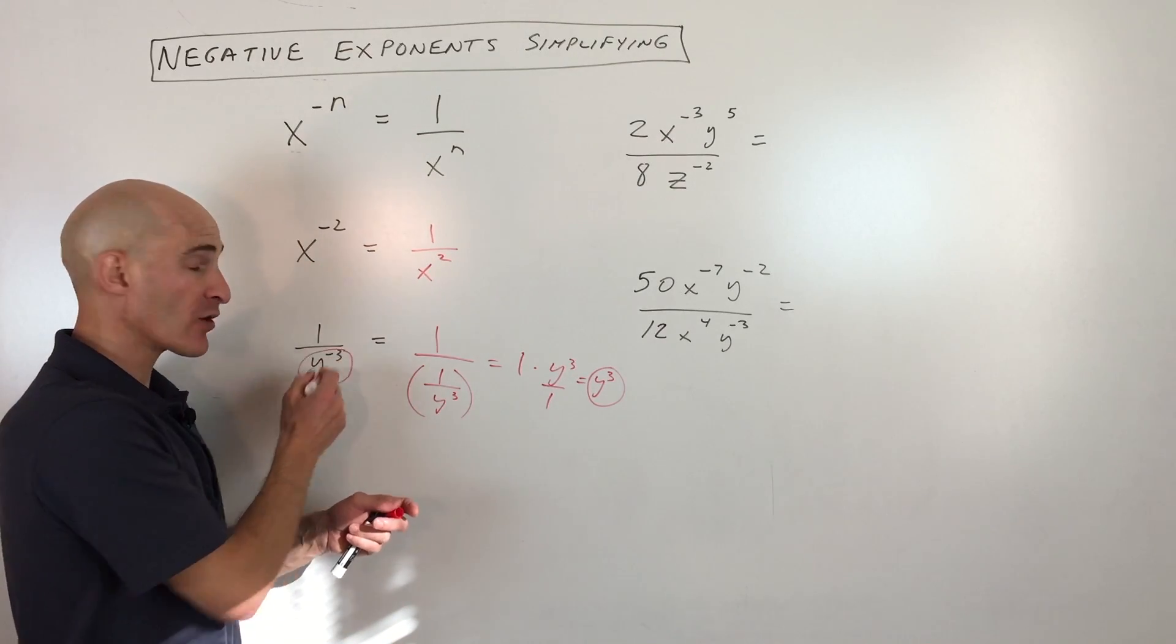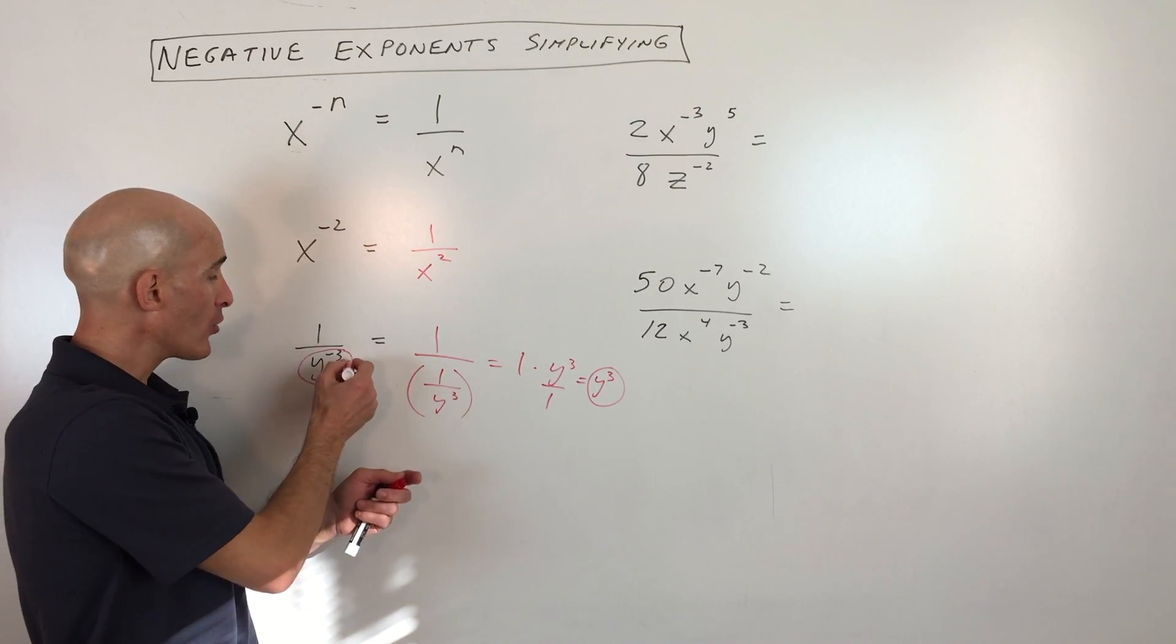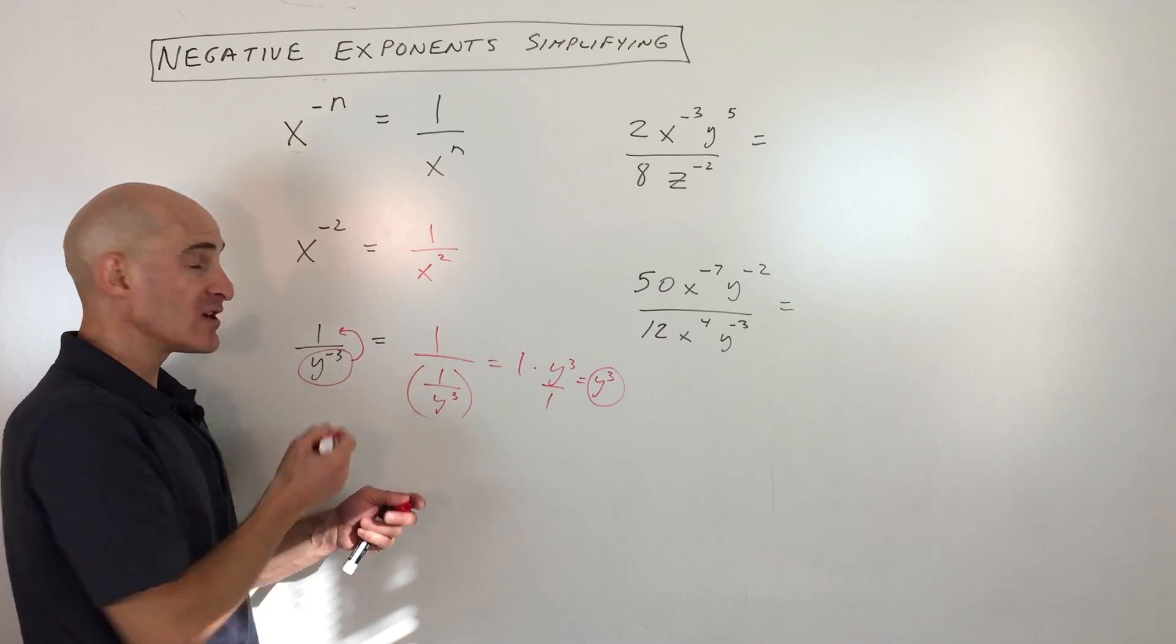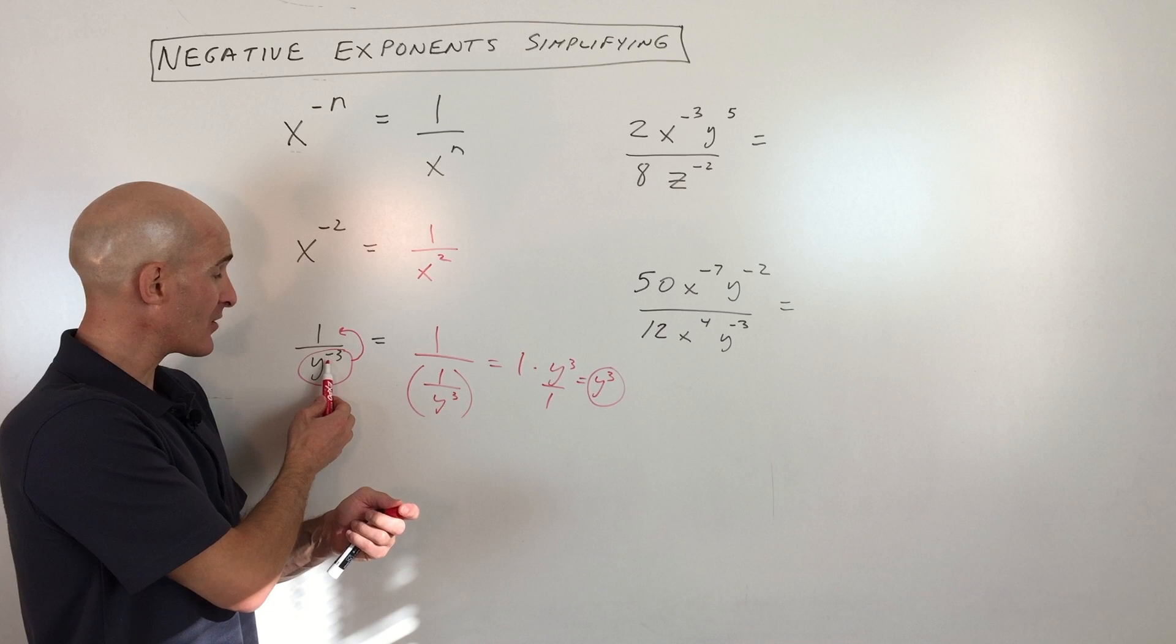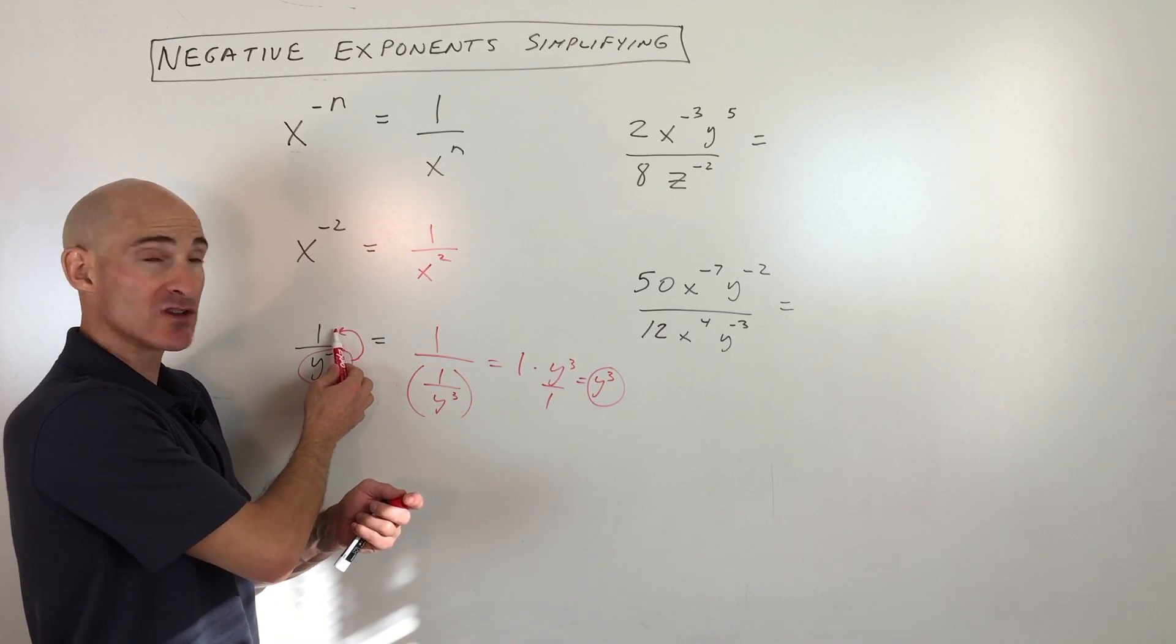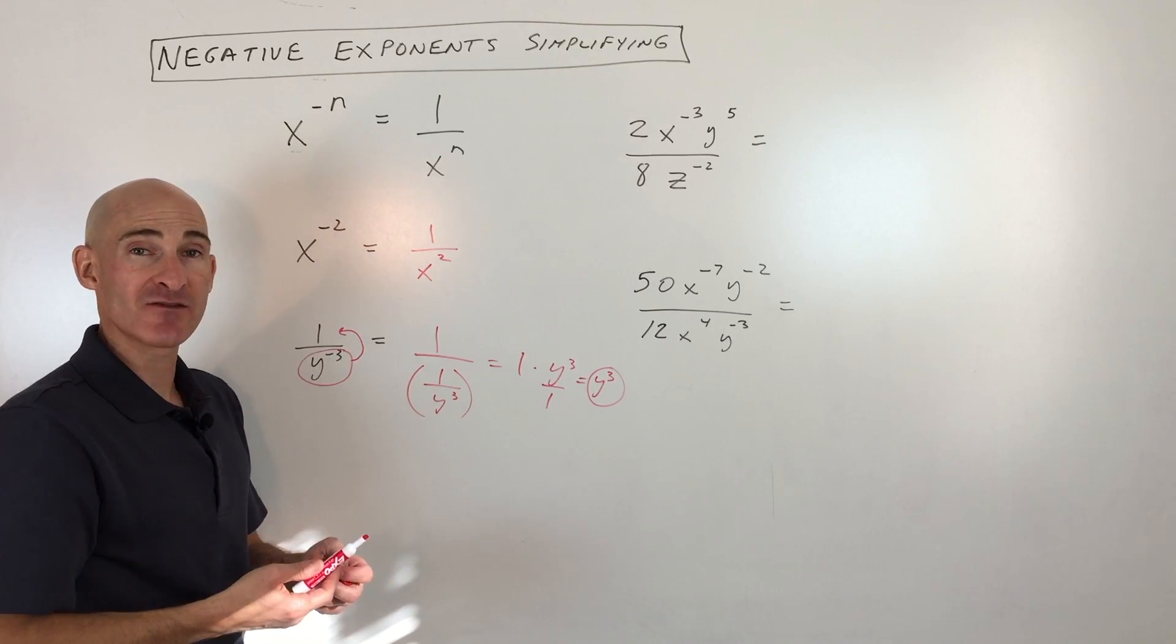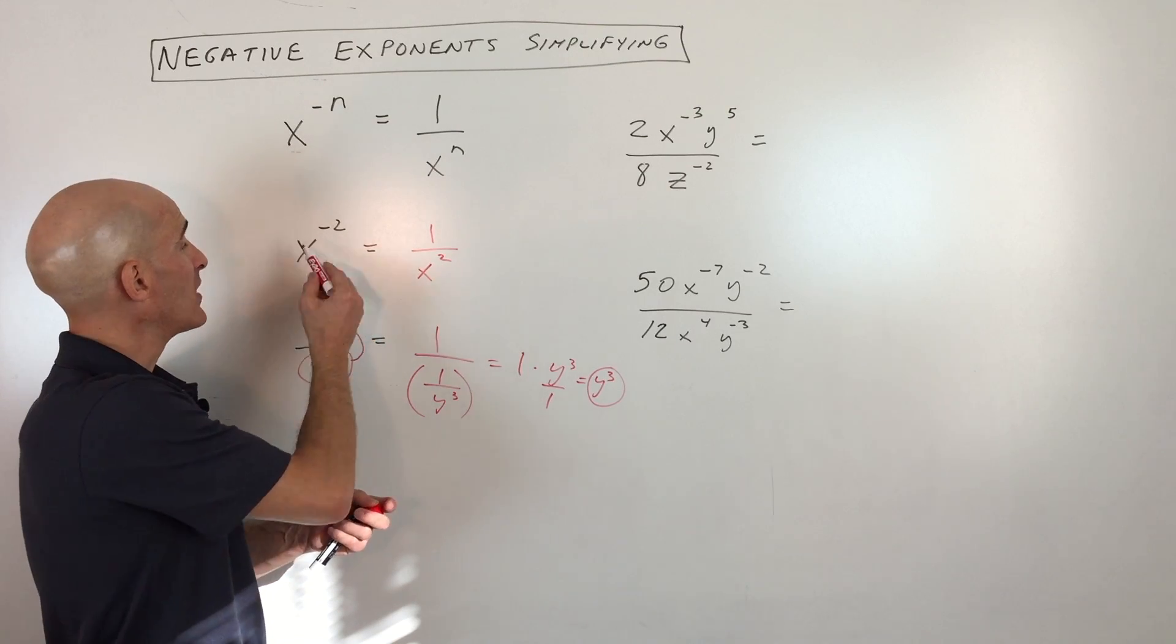All you have to do is when you see a negative exponent or quantity with a negative exponent, all you have to do is just move it to the other side of the fraction bar. So if it's a negative and it's down in the denominator, go ahead and move it into the numerator and make it a positive exponent.